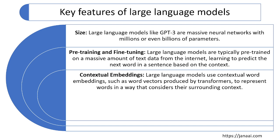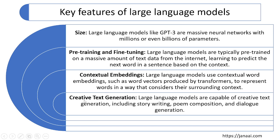The next feature is creative text generation. After all the processing — training, fine-tuning, and embedding — the model becomes capable of generating text including story writing, poem composition, and dialogue generation. Whenever you give any prompt, such as 'What is the capital of India?', the text is converted into a vector, and through transformer architecture the model generates new text or content. That is why it is called a generative model.